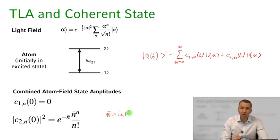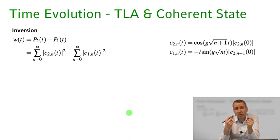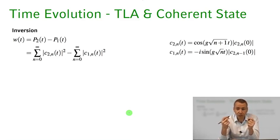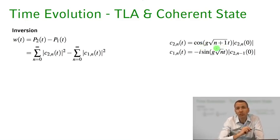This is how we choose our initial state amplitudes, and now we want to look at the time evolution. We know from the last class that if we have different Fock states, each of those Fock states will give rise to Rabi oscillations between the excited state and the ground state at the quantized Rabi frequency g times square root of n plus 1. And these were the solutions we derived in the last class.